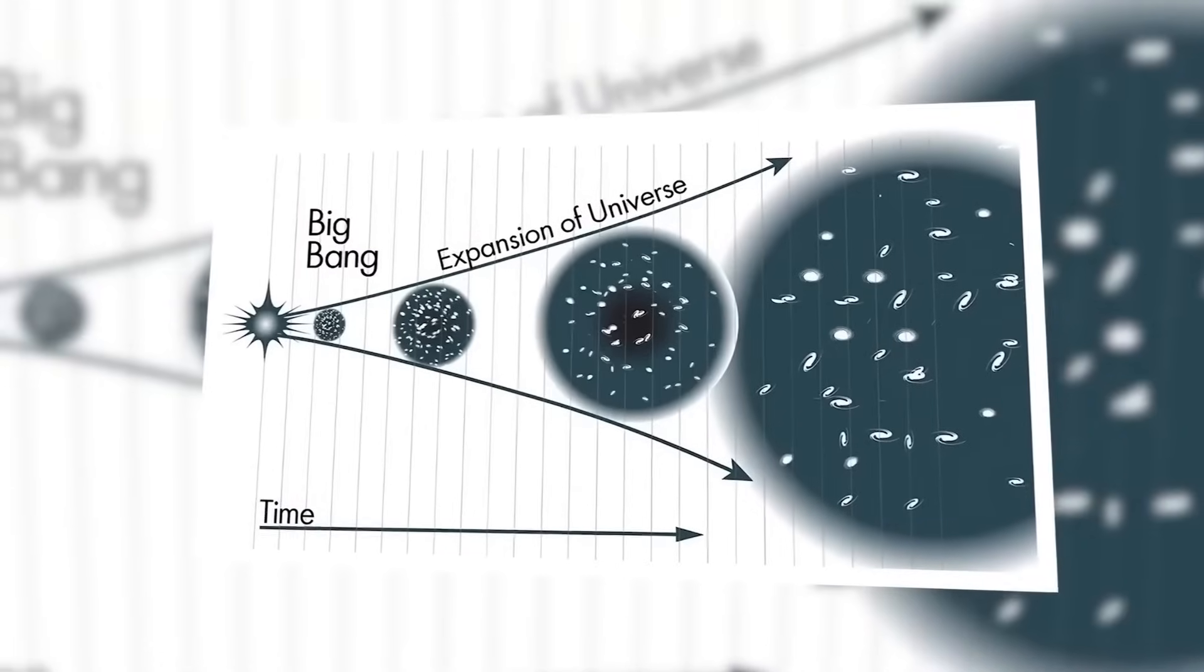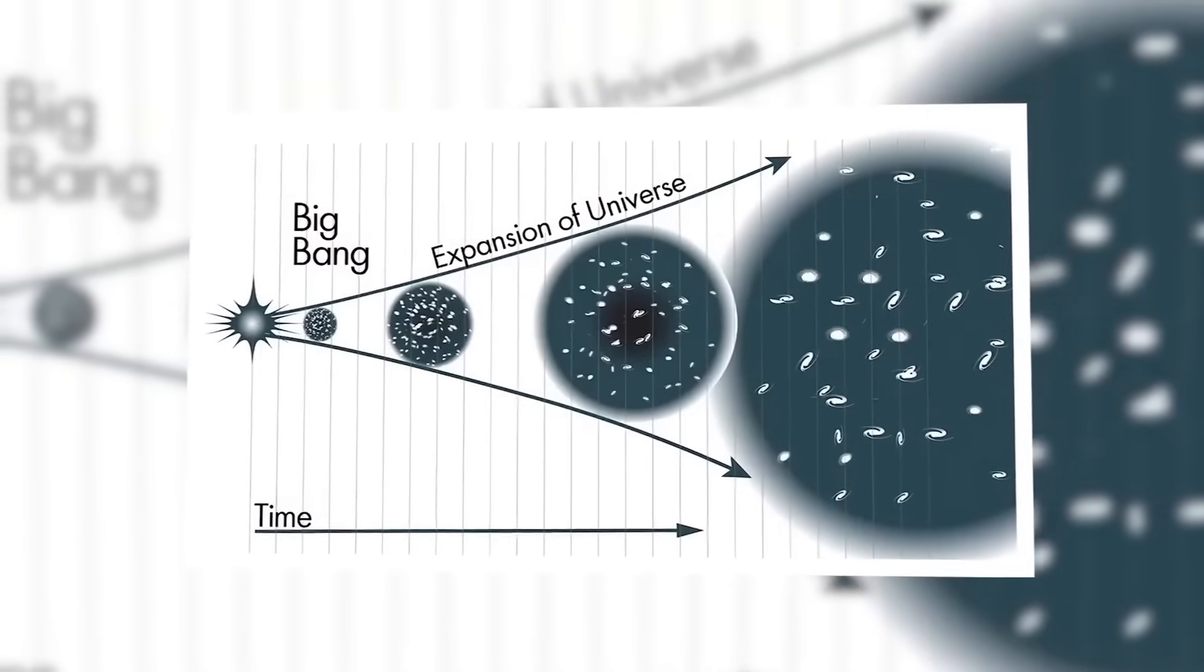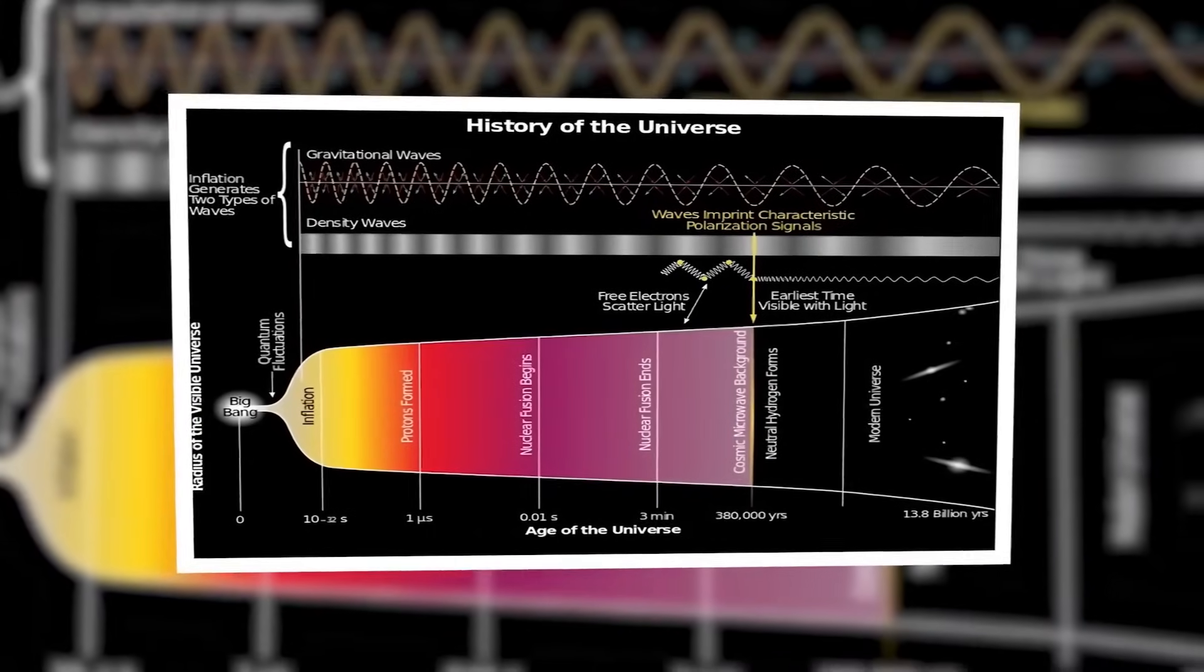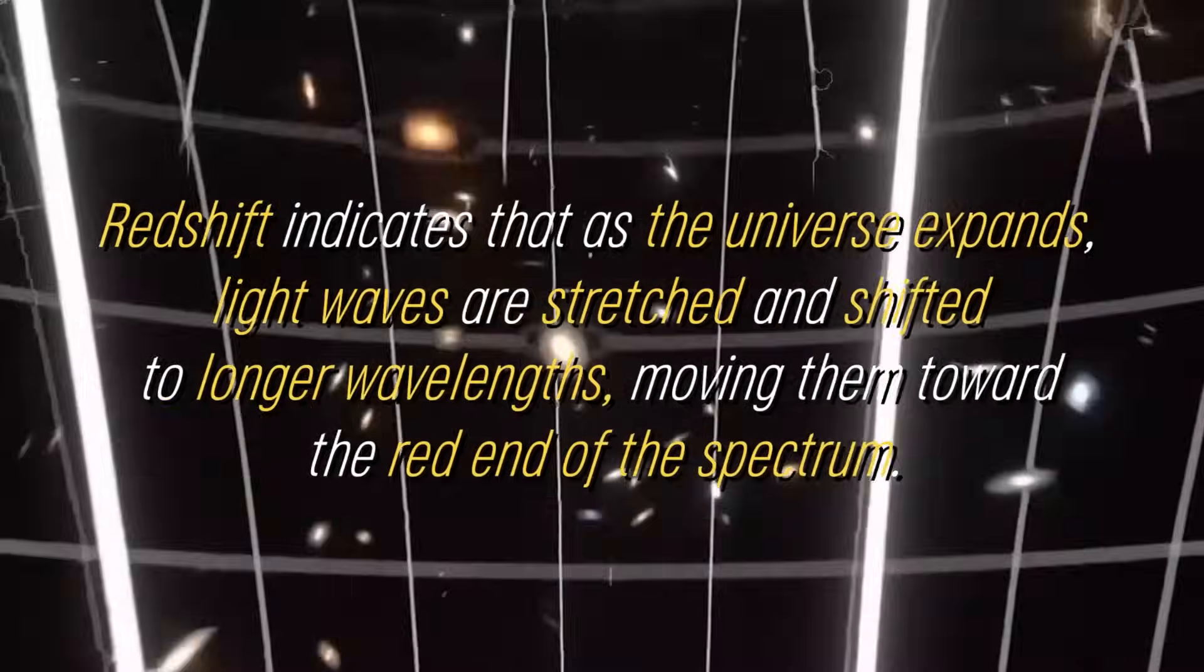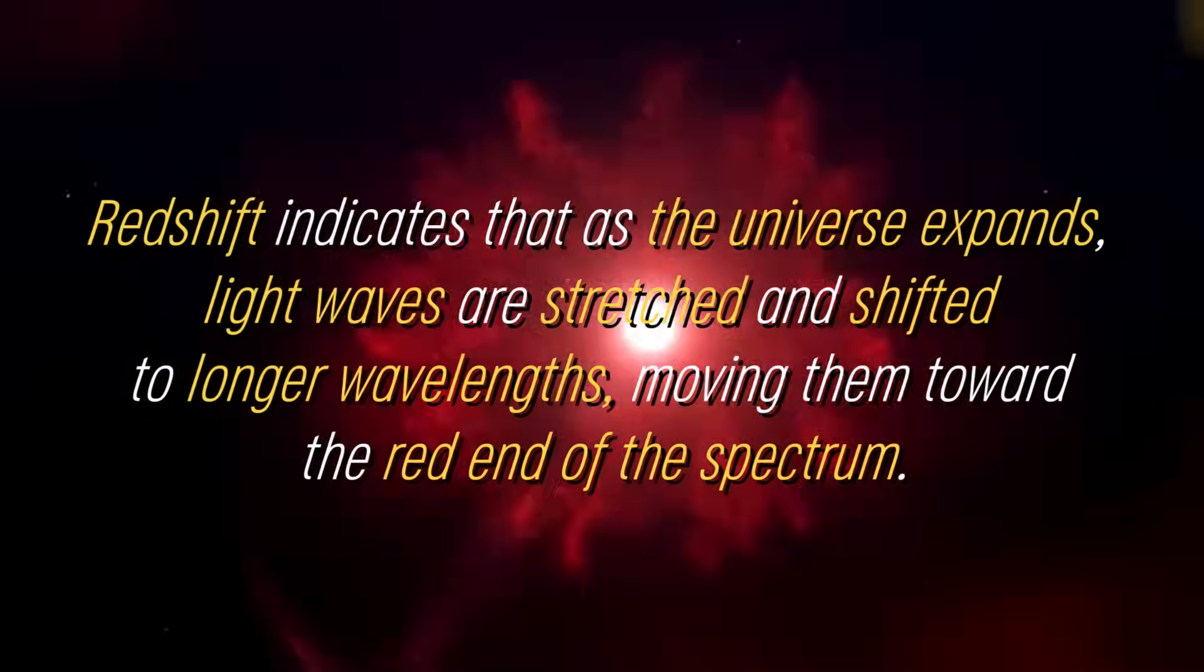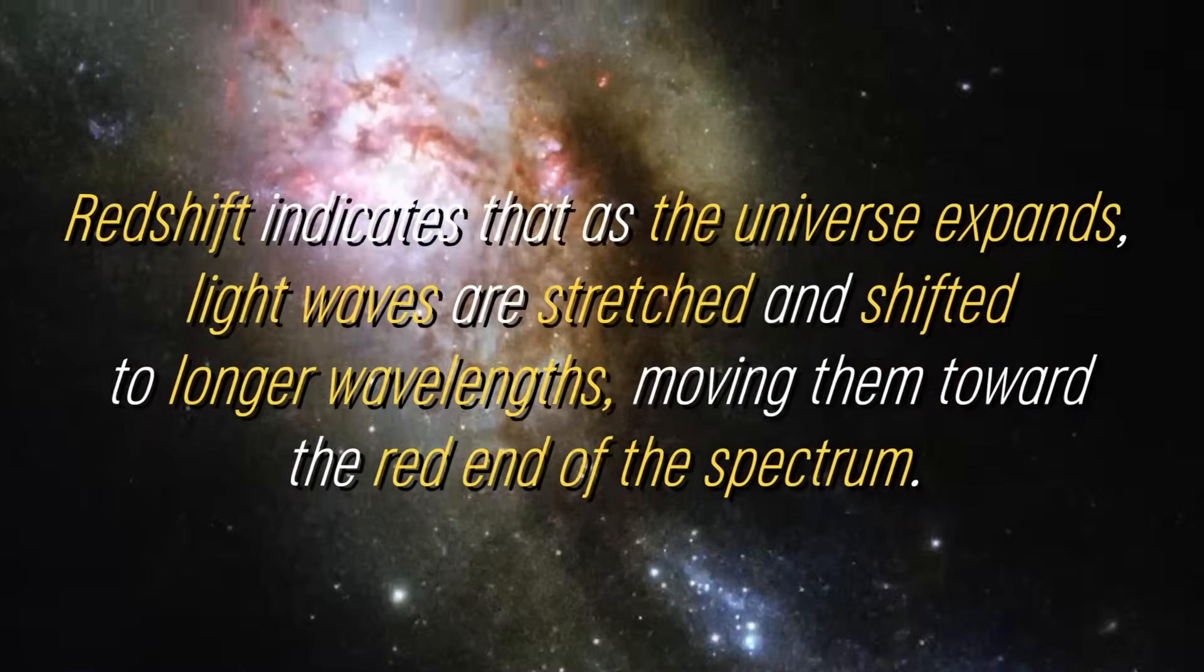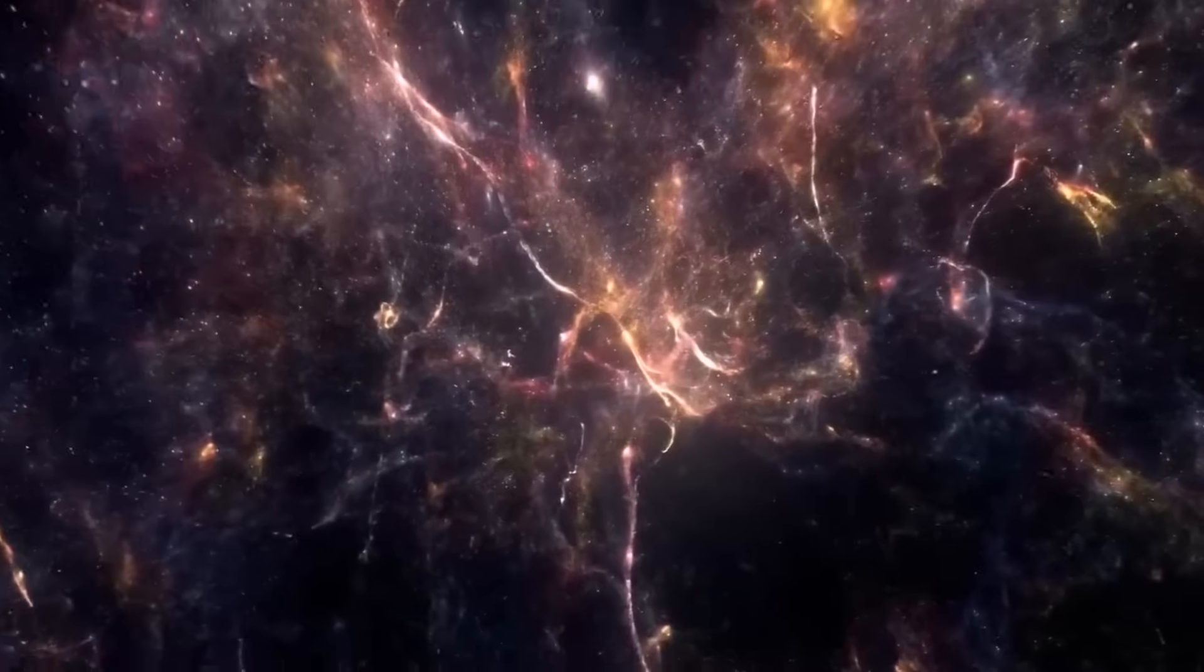Scientists have observed the effects of this expansion through various observations, such as the redshift of light from distant galaxies. Redshift indicates that as the universe expands, light waves are stretched and shifted to longer wavelengths, moving them toward the red end of the spectrum. During the expansion, all the stuff that makes up our universe was compressed into an incredibly small volume. It was clear that matter could not survive in such a compact space, so transformations occurred as the universe expanded and cooled.